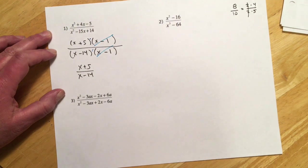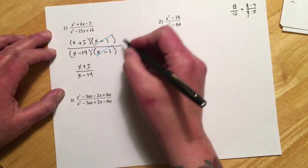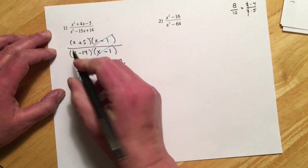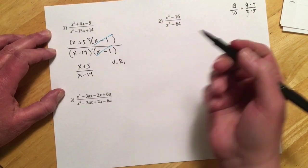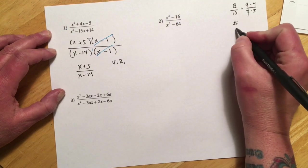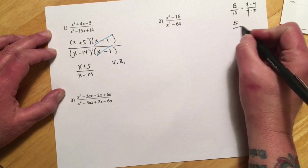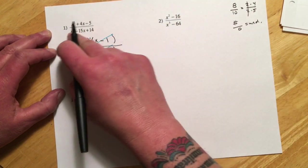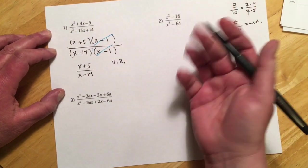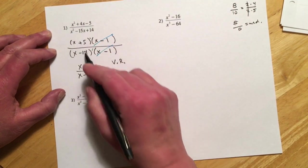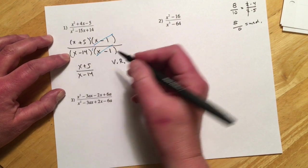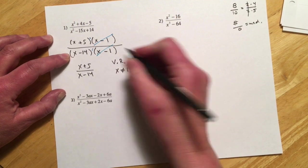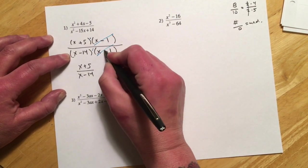The other thing that's going to ask you in this section is for the variable restrictions. And variable restrictions, I'm going to abbreviate it VR. And the variable restrictions come from the fact that we can't divide by zero. So if I have like a number over zero, that is undefined. And so anything that would make this denominator zero is going to be a variable restriction. And so if I look at this denominator, I got x minus fourteen, x minus one. And so if x was fourteen, or positive one,